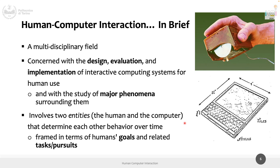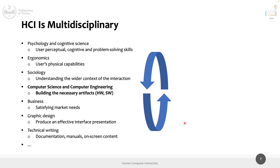HCI is a multidisciplinary field. It started from computer science and psychology — you have computers and people, so you need both. Over the years it evolved to include ergonomics, psychology, business, law, technical writing, graphical design, industrial design, and more. We'll see some things that don't feel like computer science or engineering — that's because of the 'human' in the equation and the multidisciplinary nature of the field.